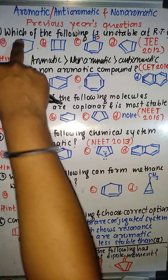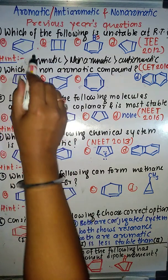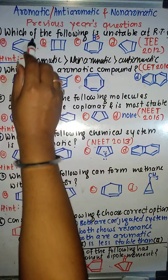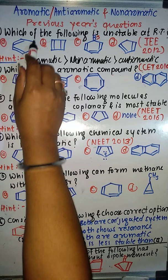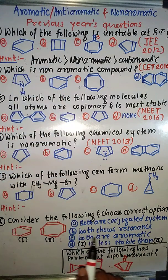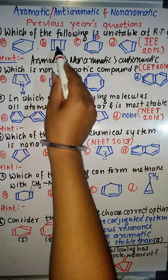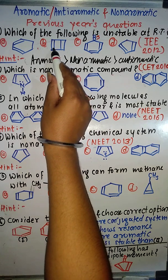The first option has an SP3 hybridized carbon. SP3 means non-planar, and non-planar means it cannot be aromatic or anti-aromatic — it means it is non-aromatic in nature. So this option is not anti-aromatic.